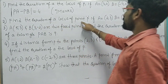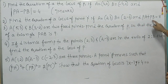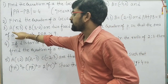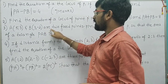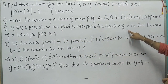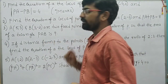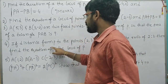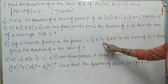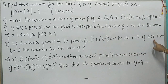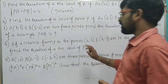Find the equation of the locus of point P if A equals (2,3), B equals (2,-3), and PA plus PB equals to 8. Next: A is (5,3), B is (2,-3), and (3,-2) are 2 fixed points. Find the equation of P such that the area of triangle PAB is 9. If the distance from P to the point (2,3) and (2,-3) are in the ratio 2:3, then find the equation of the locus of P.